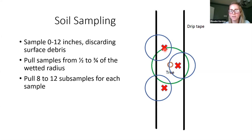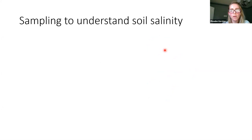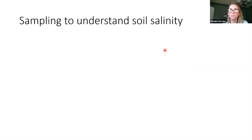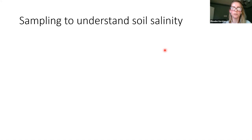For a 40-acre block, you want to pull eight to twelve sub-samples wandering around the orchard, making sure you're sampling 40 or more feet apart, combine them really well, and send it into a lab. Just like leaf tissue sampling, if you have blocks that are more than 40 acres, you probably want to divide that up and send two samples in. General soil fertility tests keep samples in the top foot of soil because that's where most of the nutrients are.